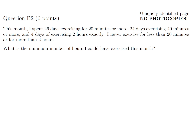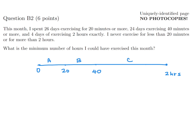This month I spent 26 days exercising for 20 minutes or more, 24 days exercising for 40 minutes or more, and 4 days exercising exactly 2 hours. I never exercised less than 20 minutes or more than 2 hours. What is the minimum number of hours I could have exercised? Let's make a number line with intervals at 20 minutes, 40 minutes, and 2 hours. Label the intervals A (0 to 20 min), B (20 to 40 min), C (40 min to 2 hours), and D (exactly 2 hours). Since I never exercised less than 20 minutes, A = 0.